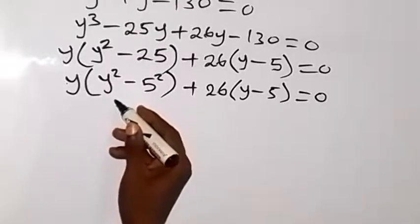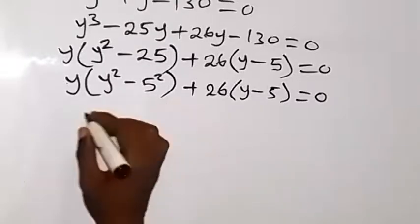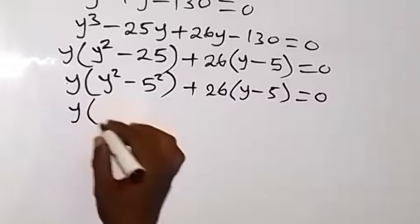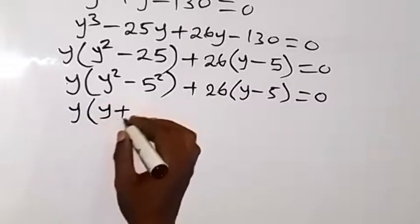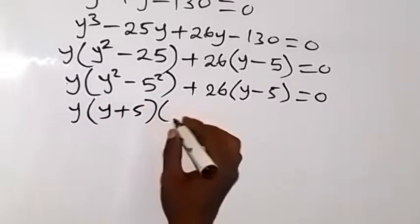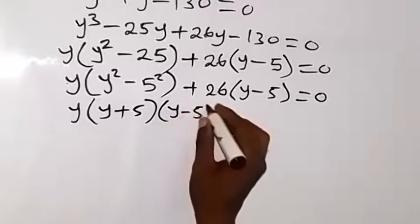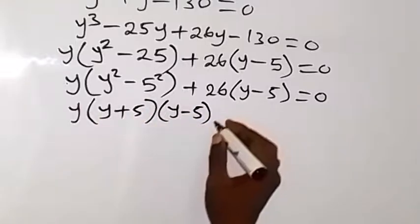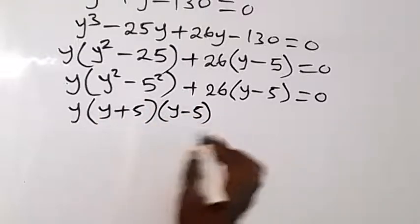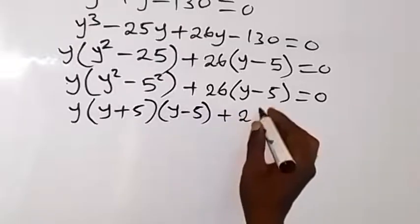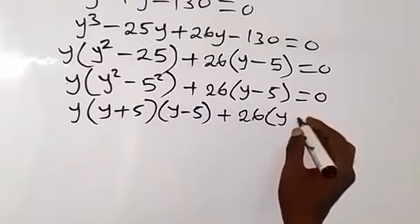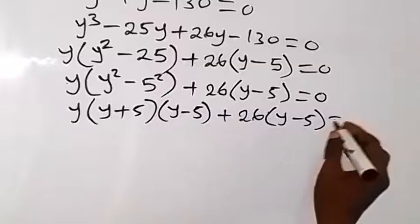And from there, we can see that from here we have difference of 2 squared which can be written as y multiplied by y plus 5, then times y minus 5. Because difference of 2 squared becomes this. Then plus 26 into y minus 5 which is equal to 0.